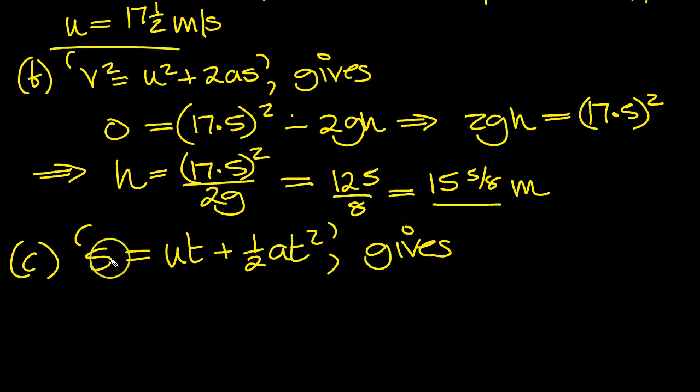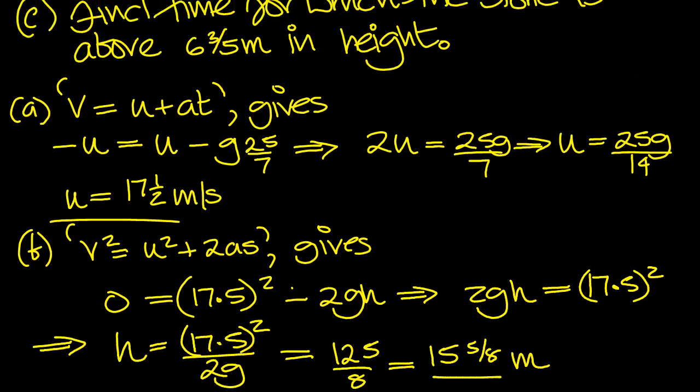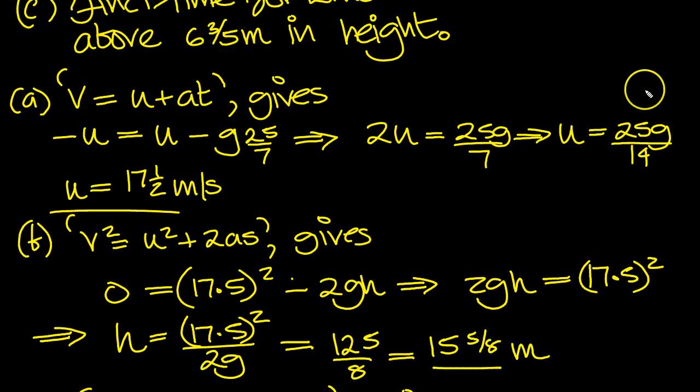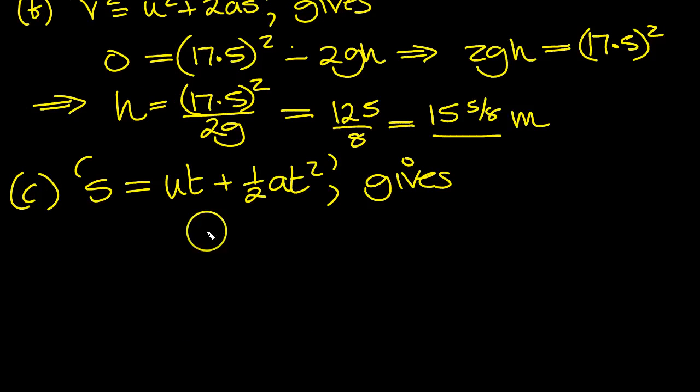Now when is the height bigger than 6.6? Let's put that down. So ut is 17.5t, plus acceleration is minus g upwards. Minus 9.8 over 2 is minus 4.9. So I'm putting that down straight away as a decimal. So here's our ut, a was minus 9.8 times a half, it's 4.9, minus of course, t squared.